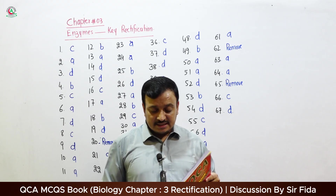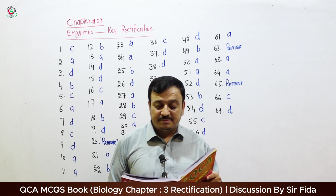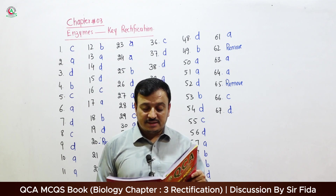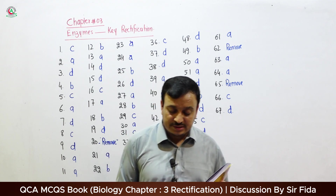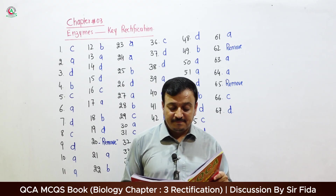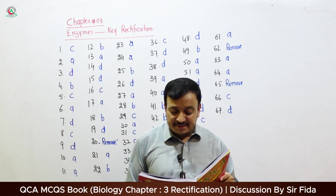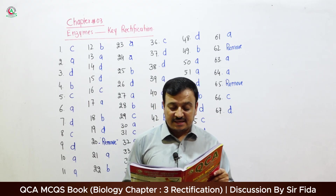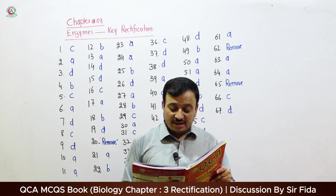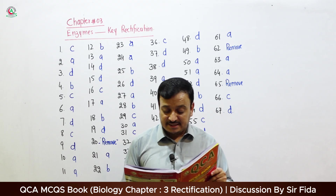Question 57: A substance which is similar in structure to substrate but different in composition is called — A: Inhibitor. Question 58: Those inhibitors which block the activity of an enzyme permanently are called — B: Irreversible inhibitors. Question 59: The inhibitor which blocks the active site of an enzyme is called a Competitive inhibitor. Question 60: All of the following are non-competitive inhibitors except — D: Sulphonamide and Meliase.